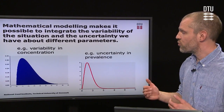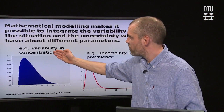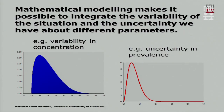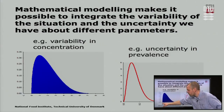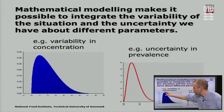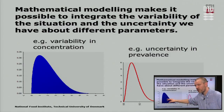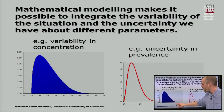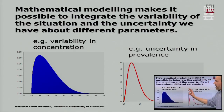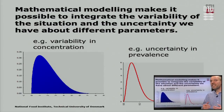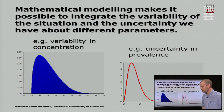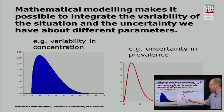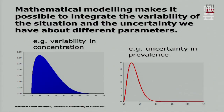Here I have two illustrations. The first illustrates the variability in concentration — the concentration can range from zero logs to seven logs with different probabilities. Most of the servings have a very low concentration and some of the servings have a very high concentration. Taking this into account gives a realistic picture of the situation — these are of course the most risky servings. We can also express uncertainty, for instance in the prevalence. We are not certain about the prevalence, and you can take that uncertainty into account in the estimate. This graph illustrates the prevalence on the horizontal axis and the height illustrates the probability of different prevalences, showing that the most likely prevalence is ten percent but it can range up to forty or fifty percent.